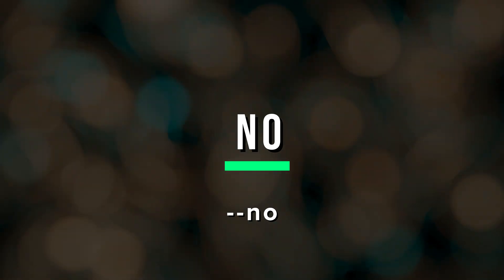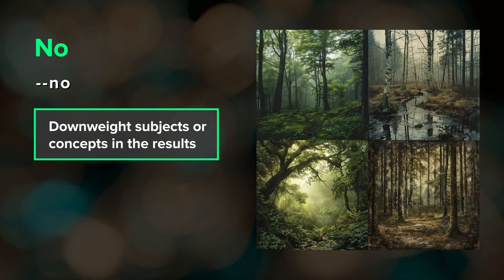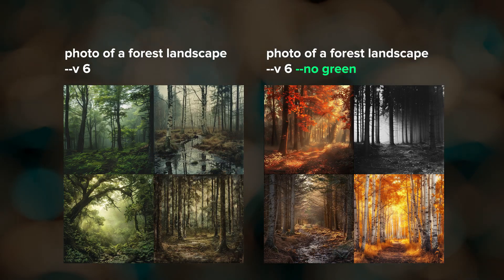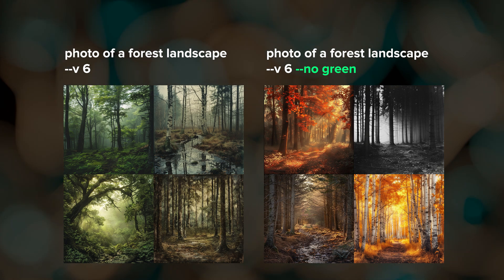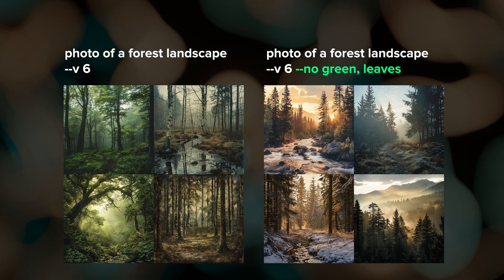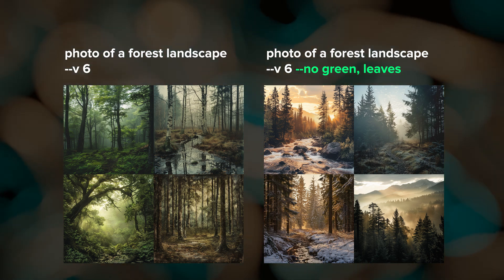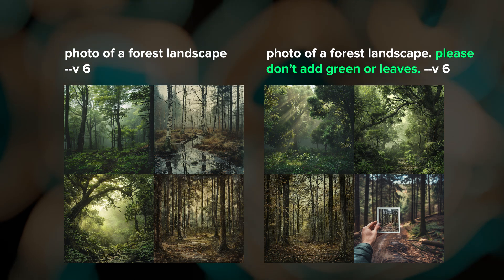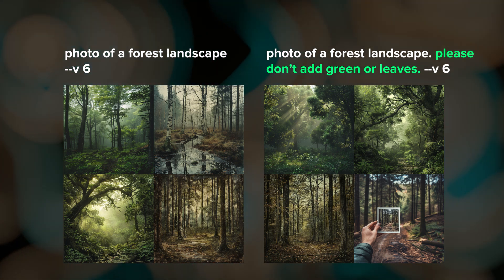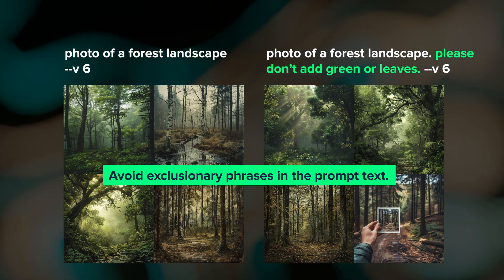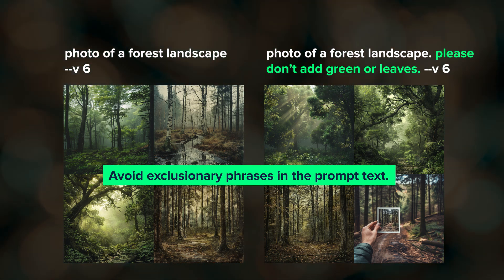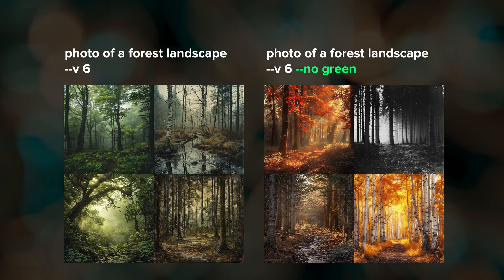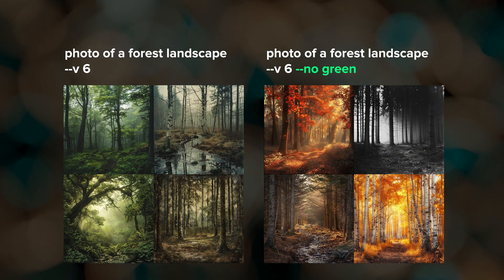Next, let's talk about the no parameter. No tells Midjourney what you don't want in your image. Add --no followed by whatever you want to exclude; if there are multiple things, separate them with commas. Exclusionary phrases in your main prompt text won't be interpreted the same way — instead, use the no parameter, which will downweight specific words and phrases.